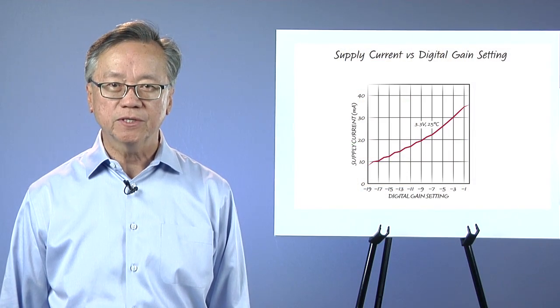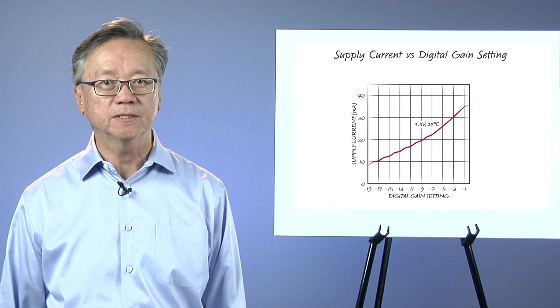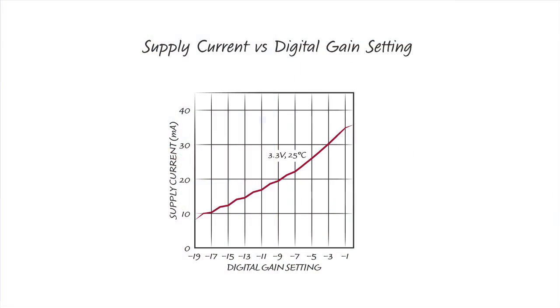It is important to note that adjusting the gain affects the supply current. As shown in this plot, as the gain is reduced, the supply current also drops to about 8 mA at its minimum. So it is possible to reduce the power consumption, but it trades off the gain and correspondingly its output signal levels.